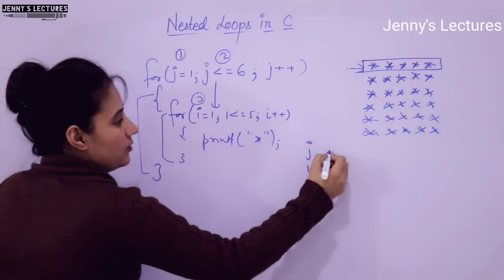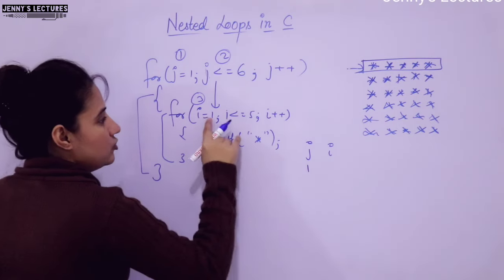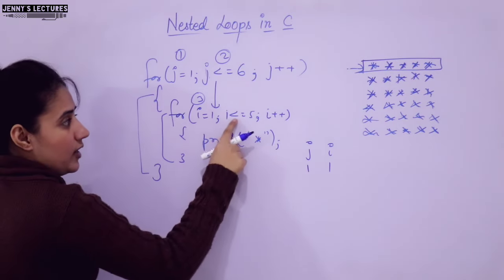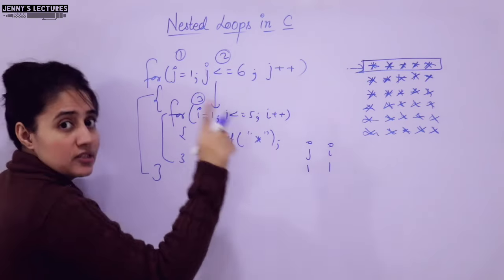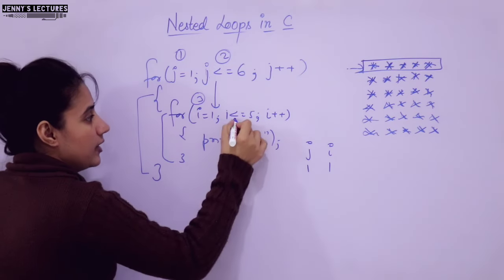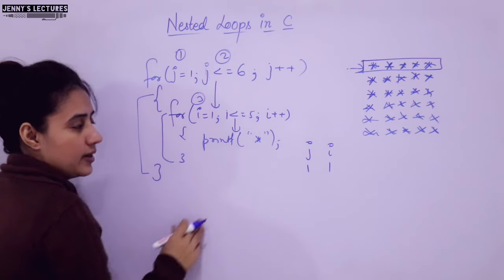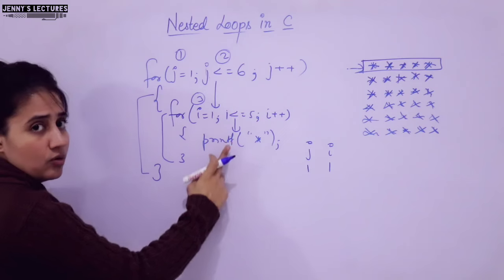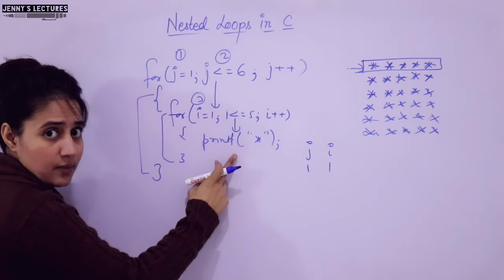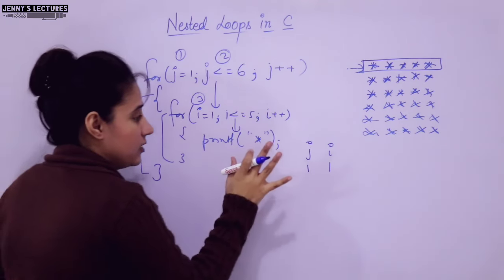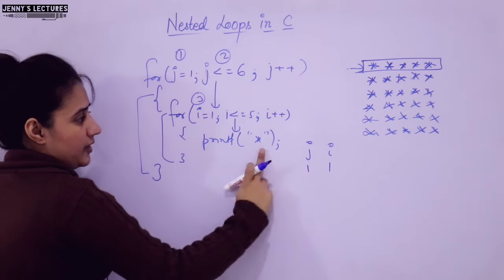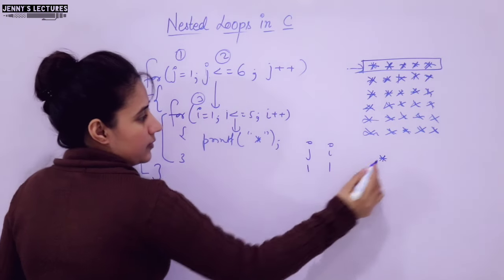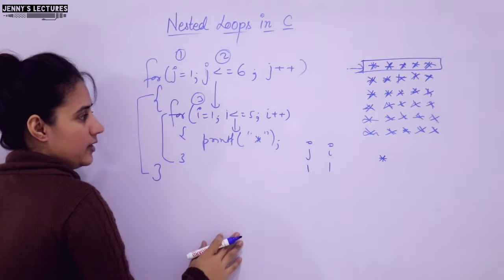Now inside the outer loop, we have variable i. i is 1. Is 1 <= 5? Yes, condition is true. We enter the inner loop body. There is a printf statement — a star will be printed. Now what happens next? We are inside the inner loop, so control goes to i++, not j++.